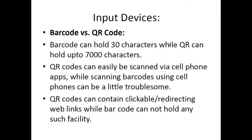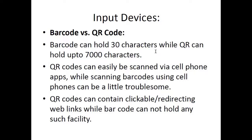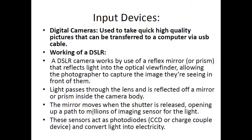Barcode versus QR code: a barcode can hold only up to 30 characters and only numerical characters, whereas a QR code can hold up to 7,000 alphanumeric characters including special characters, alphabets, and numbers. QR codes can easily be scanned by cell phones, whereas scanning barcodes using a cell phone can be troublesome. QR codes can contain clickable, redirectable web links, whereas barcodes can only hold numerical data.